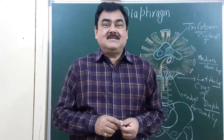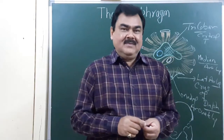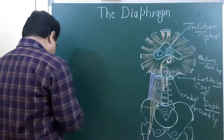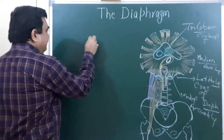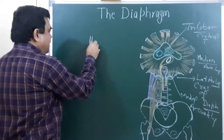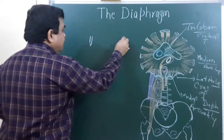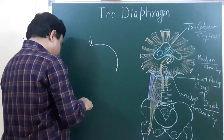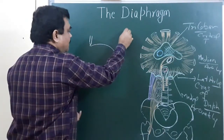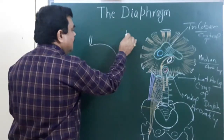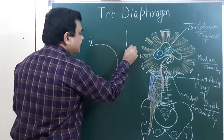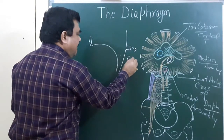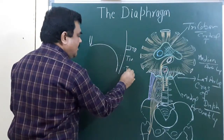We will discuss about the structures passing through the diaphragm in relation with the diagram. In this diagram, this is the position of the sternum, here is the position of the diaphragm — the dome-shaped diaphragm — and this is the position of the vertebra. This is the level of T8 vertebra, this is the level of T10 vertebra, and this is the level of T12 vertebra.